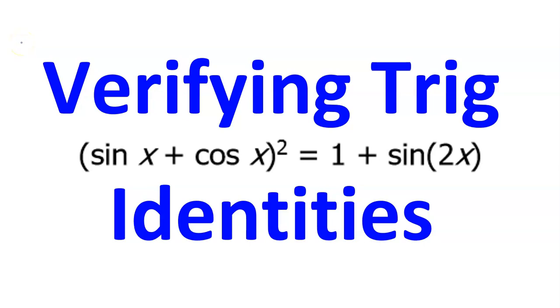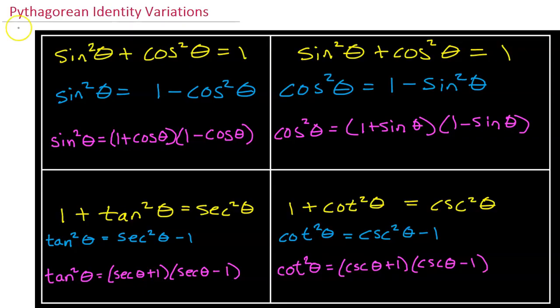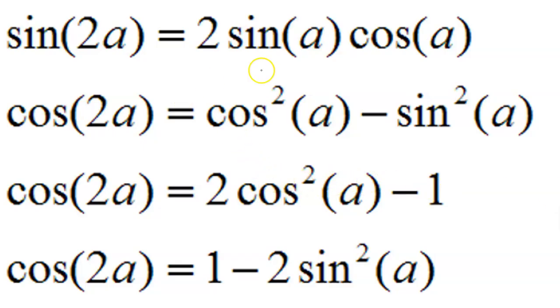In this unit we are reviewing the skills necessary to be successful in AP calculus. In this video let's review verifying trig identities. Along the way we may need our Pythagorean identities, so at the very least memorize the three that are shown here in yellow. We may also need these double angle identities, so make sure you have these memorized as well.